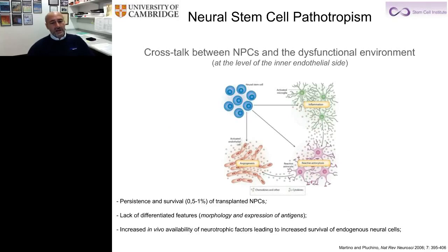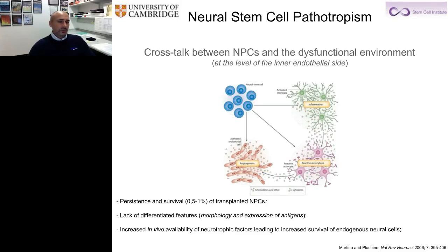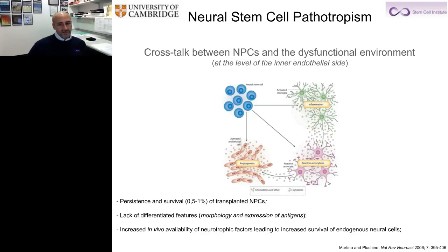Once stem cells migrate into the brain parenchyma, this intercellular communication program continues at the level of the inner endothelial site. The overall result of this sophisticated interaction is that we witness limited survival of the graft — usually between 0.5 and 1% of transplanted stem cells are detected in vivo weeks or months after transplantation. The great majority of stem cells are incapable of progressing towards a specific differentiation program, yet we quantify a significantly increased in vivo availability of neurotrophic factors and stem cell regulators, leading to increased survival of endogenous neural cells.